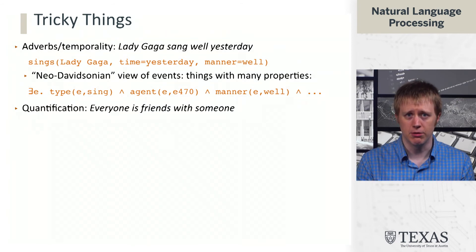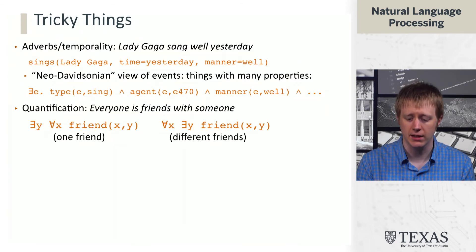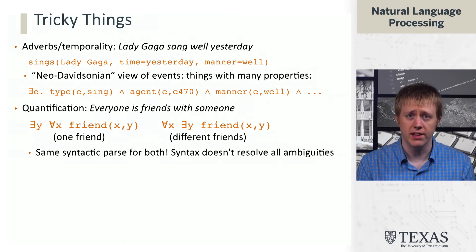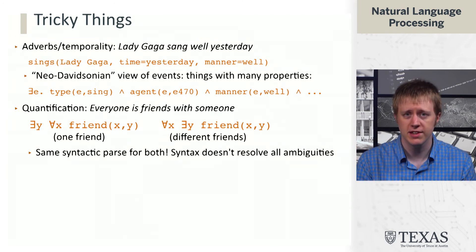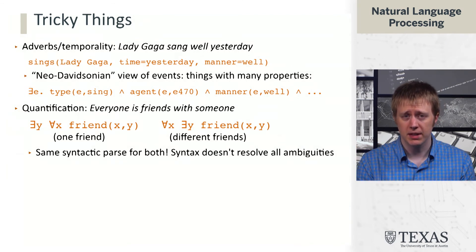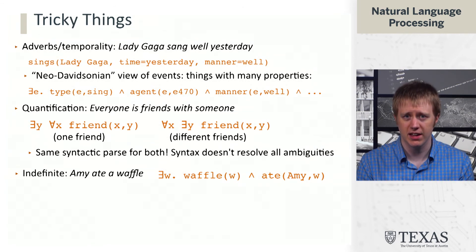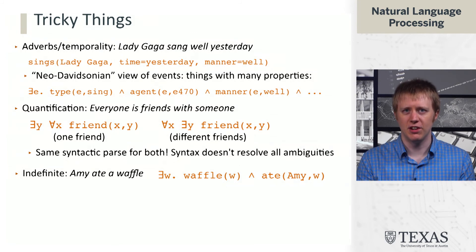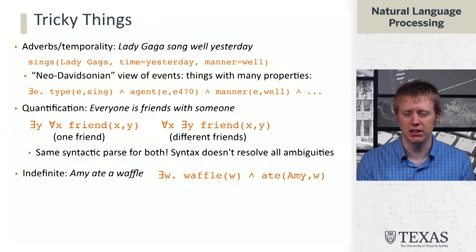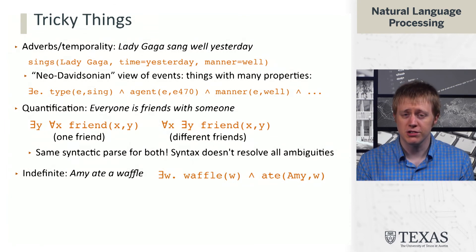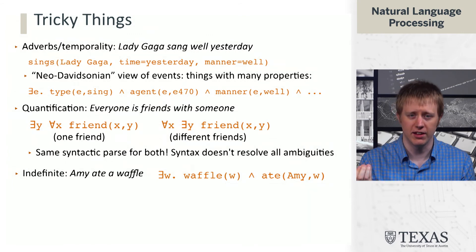We also discussed quantification ambiguity, another big challenge we haven't addressed. Syntactically, both interpretations — one person friends with everyone, versus everyone having a different friend — have the same syntactic parse. We need something else to deal with this semantic ambiguity not present in the syntax. Similarly, it's very hard to nail down indefinite things: 'Amy ate a waffle' — we say there exists a waffle and Amy ate it, but without a database of waffles, we can't evaluate the truth of this. This representation may still be useful for some things, but we can't apply it in the way we've been building up.